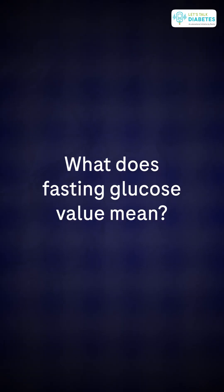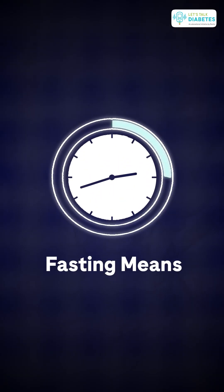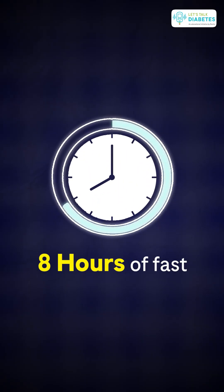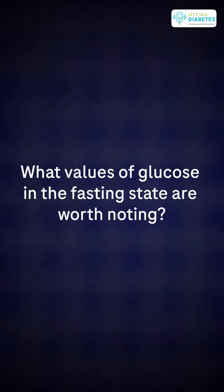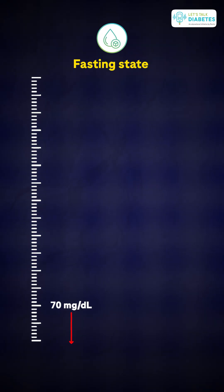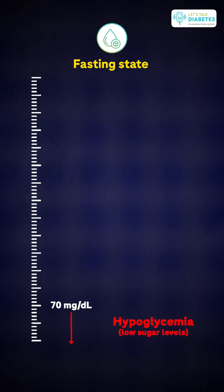What does fasting glucose value mean? By definition, fasting means eight hours of fast. When you don't have any food or any liquids, except water, for eight hours, you are in a fasting state. Less than 70 milligram percent of fasting glucose is when we say that the patient's glucose is going low, or hypoglycemia.